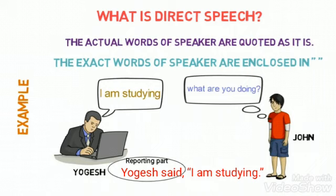Here, Yogi said, 'I am studying.' 'Yogi said' is the reporting part. 'I am studying' is the reported part. So the actual words of Yogi are enclosed within double quotation marks. 'Yogi said, I am studying' — 'I am studying' is enclosed within double quotation marks. So it is called direct speech.